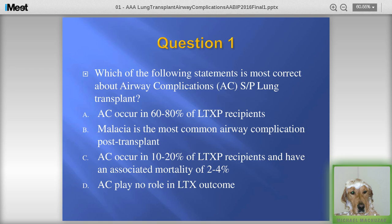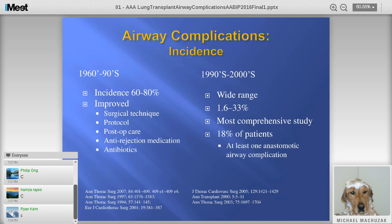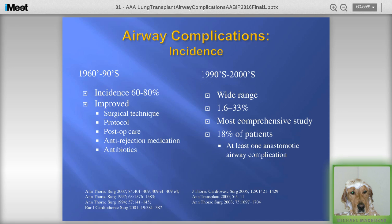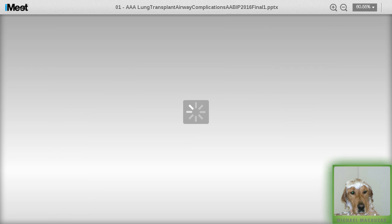The answer is C — 10 to 20% of recipients with an associated mortality of 2 to 4%. The 60 to 80% figure was not just picked out of thin air; in the beginning of lung transplant, that's actually where the complications were. We've been fortunate to have improved surgical techniques, better protocols, better post-op care, antibiotics, anti-rejection medicines, and folks that have developed an interest in airways. Looking through the literature from the 90s to the 2000s, the numbers range as low as 1.6% and as high as 1 in 3. In the largest study from the early 2000s, about 18% of patients had complications, and most experts agree it's around 15%.